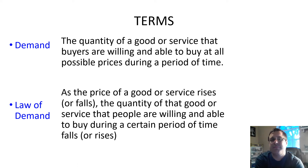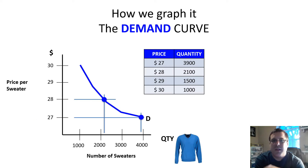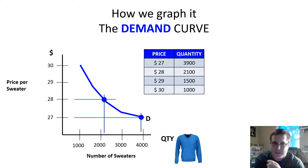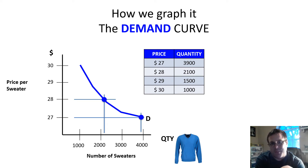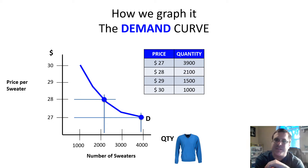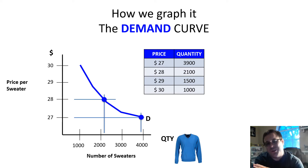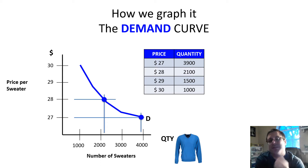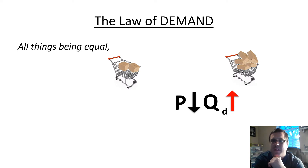So how do we show this? We use a graph called a demand curve. For example, with sweaters: at $27 almost 4,000 sweaters can be sold, at $30 only 1,000 sweaters are sold. You can show it as a table, but a graph is usually preferred because when we add supply, it's much easier to see how the two interact with each other.